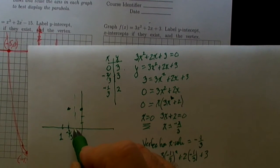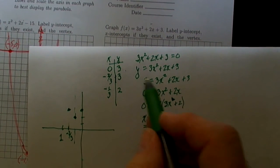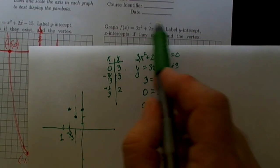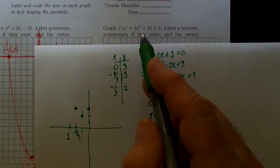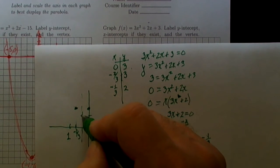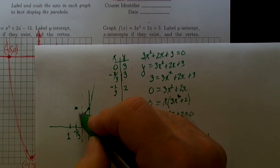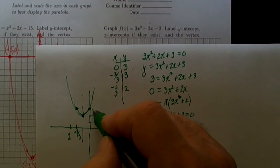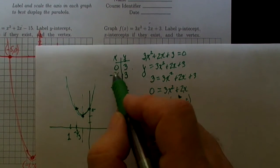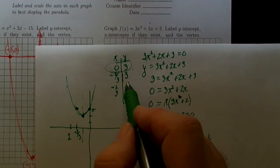When x is minus 1/3, the y value is 2. So when we're here at minus 1/3 in our graph we're up at 2. This particular parabola is an opening up parabola because that leading coefficient is positive. There is no x-intercept at all but there's the y-intercept and the vertex right there.